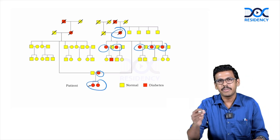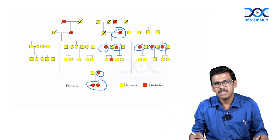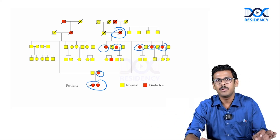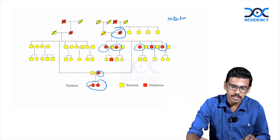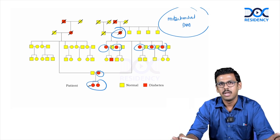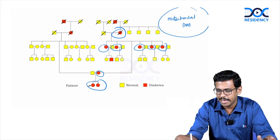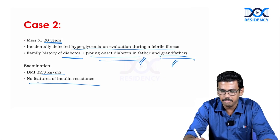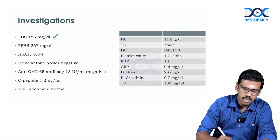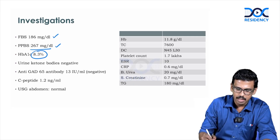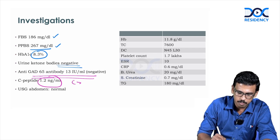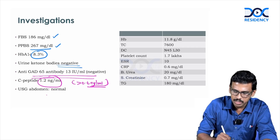However, looking at the pedigree pattern is critical. If all affected individuals across generations are female, mitochondrial diabetes should be considered rather than MODY. In this case, diabetes was present in the father and grandfather, making mitochondrial diabetes unlikely. Investigations show elevated fasting and postprandial glucose, high HbA1c, negative ketones, negative GAD-65 antibody, normal C-peptide above 0.6 ng/mL, and normal ultrasound abdomen — consistent with a monogenic cause.